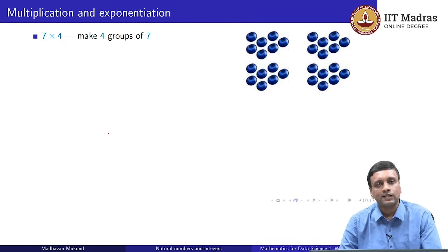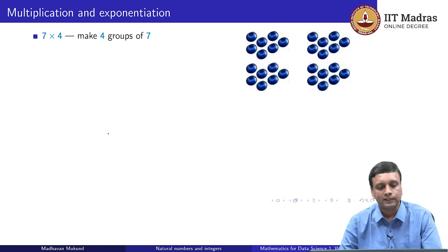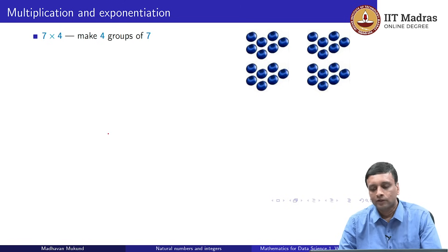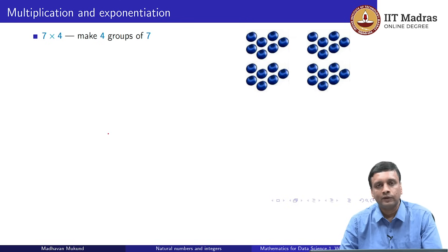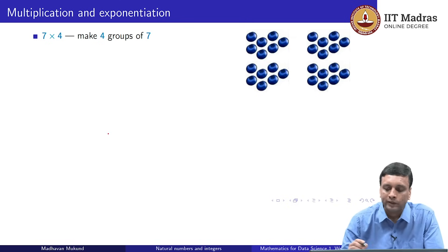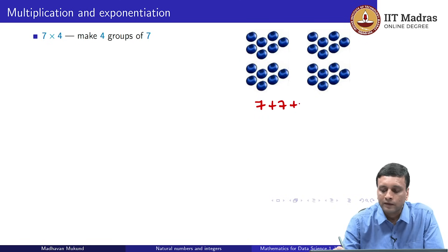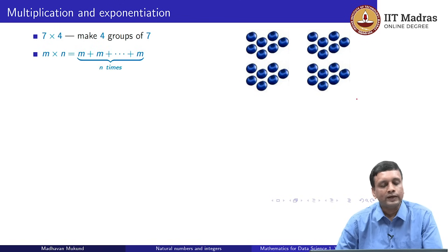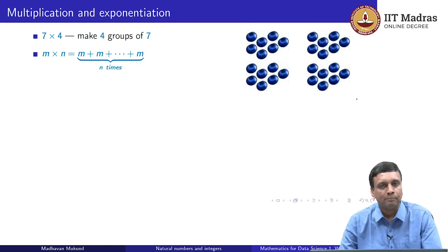Subtraction takes us away from natural numbers and we introduced the integers. Now let us look at multiplication and division. When we say 7 times 4, what we are really saying is take 7 objects and make 4 copies of them. On the right we have those 7 balls, and we have made 4 copies. We have 4 groups of 7, which adds up to 28. In general, when we take a number m and multiply it by n, we are making n copies of m — we are taking m plus m plus m, n times. So multiplication is repeated addition.